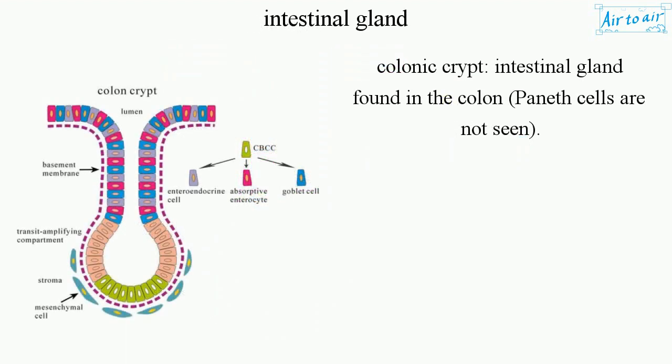Colonic crypt: an intestinal gland found in the colon. Paneth cells are not seen.